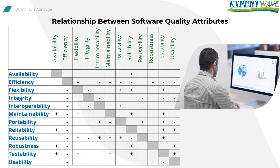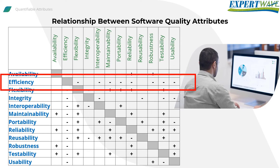Now let's talk about the relationship between software quality attributes. We are still discussing non-functional requirements, and the table on the screen briefly shows how some non-functional requirements relate to each other. For example, suppose I need to create efficient software — meaning the software should use low power, low processor, low memory, and low bandwidth for a specific platform. To achieve that, I might need to write the software in a particular way to make it as efficient as possible. As a result, the maintainability and portability of the software may decrease — hence the minus under maintainability and portability in the table.